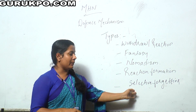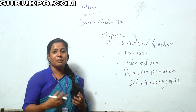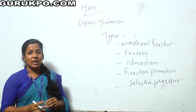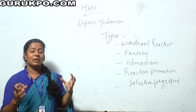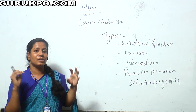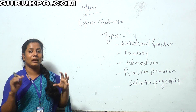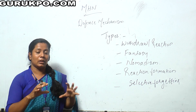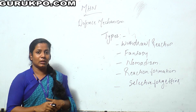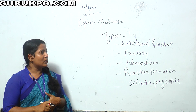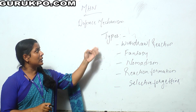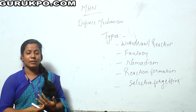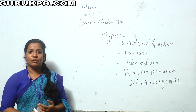The last one is selective forgetting. If something bad happened in a person's life, she or he will selectively or forcibly start to forget that situation. So that is about the types of defense mechanism. Thank you.